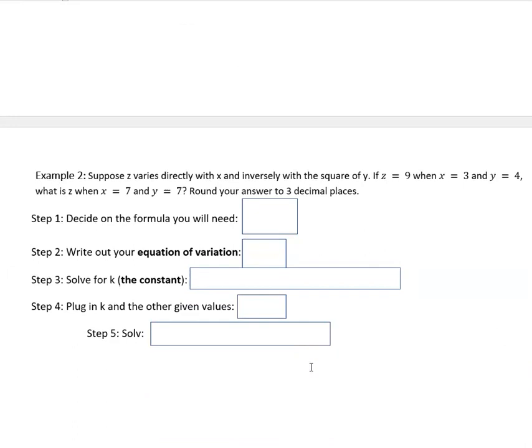Suppose z varies directly with x and inversely with the square of y. Z is 9 when x is 3 and y is 4. What is z when x is 7 and y is 7? Round your answer to three decimal places. Decide on the formula you will need. We're talking about z equals directly with x, so that's going to be kx, and inversely with the square of y, which puts that y in the denominator. So it looks like that.